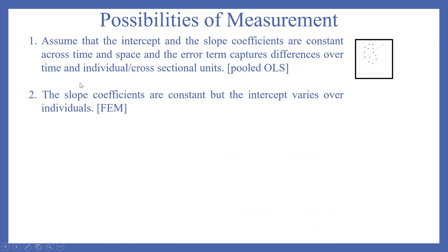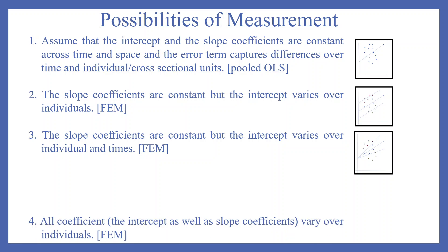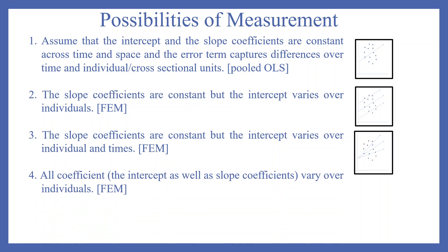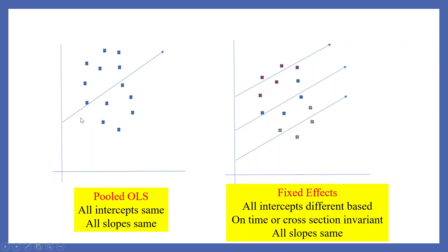The possibilities of the model specification could be: (1) slope coefficients are constant but the intercept varies over individuals — fixed effects; (2) slope coefficients are constant but the intercept varies over individuals and times; (3) all coefficients vary over individuals — fixed effects model; (4) all coefficients, both intercept and slope, vary over individuals and time. When we fit a common line through all points, it is known as pooled OLS — all intercepts same, all slopes same.